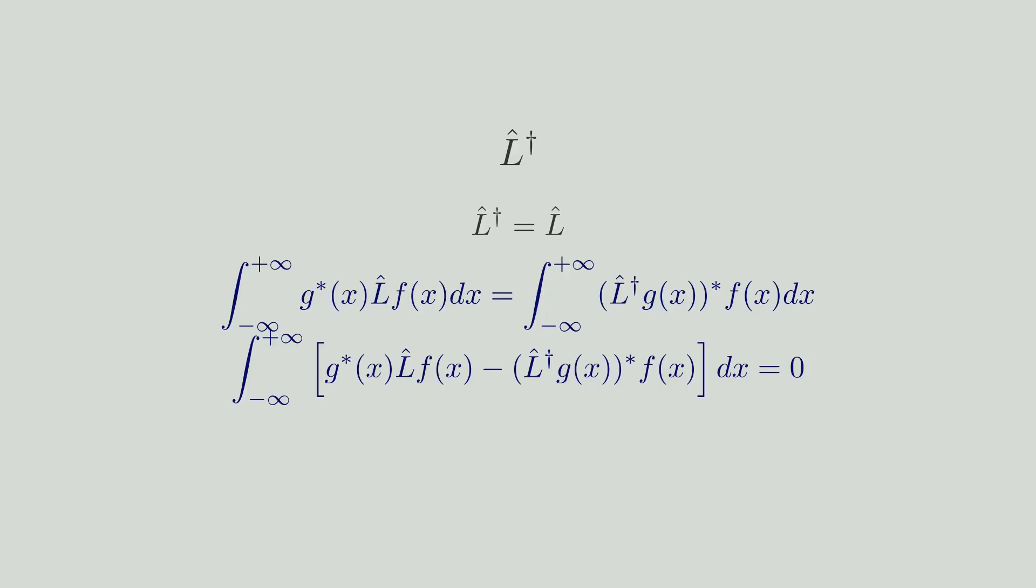The Hermitian conjugate of l-hat is denoted by a dagger sign. The operator is Hermitian if its Hermitian conjugate is equal to the original. Suppose we have two functions, namely f and g. The operator l-hat is Hermitian if it fulfills this criterion. In other words, we want the two integration terms to cancel each other.